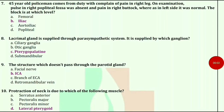A 45-year-old policeman comes from duty with complaint of pain in right leg. On examination, pulse in right popliteal fossa was absent and pain in right buttock, whereas in left side it was normal. The block is at which level? The answer is iliac.